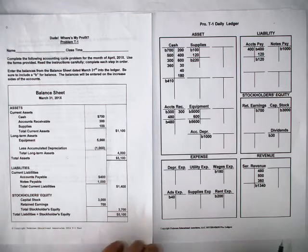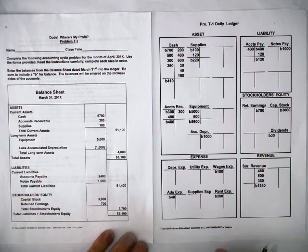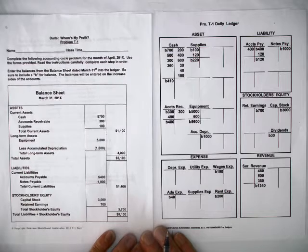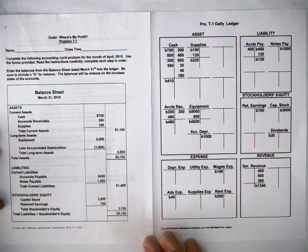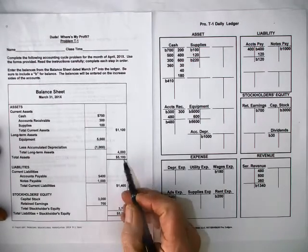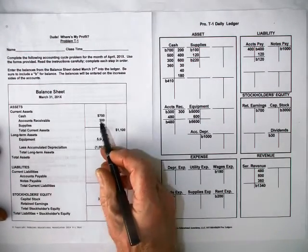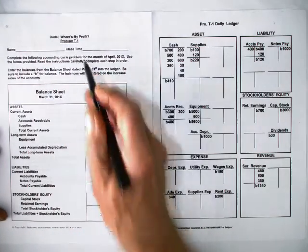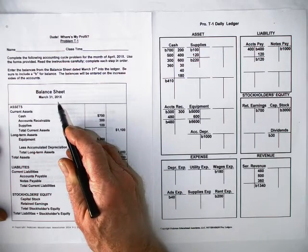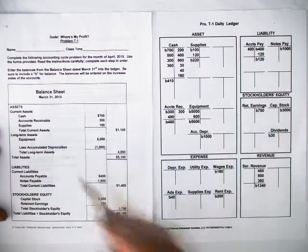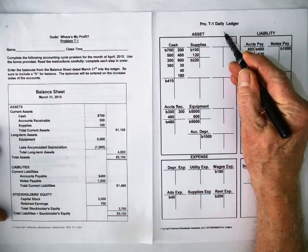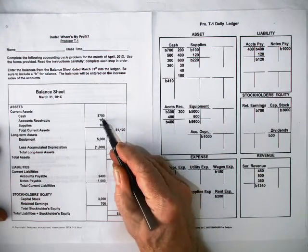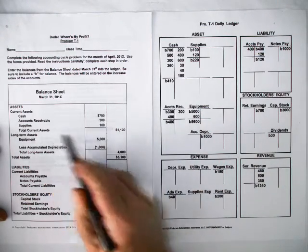This video is a continuation of accounting cycle number one. We're going to follow up with the work we did in recording the daily transactions. As you recall, what you did is you entered the numbers from the balance sheet from March 31st, which is the end of the accounting period. This new accounting period starts on April 1st, so all the balances have to be transferred.